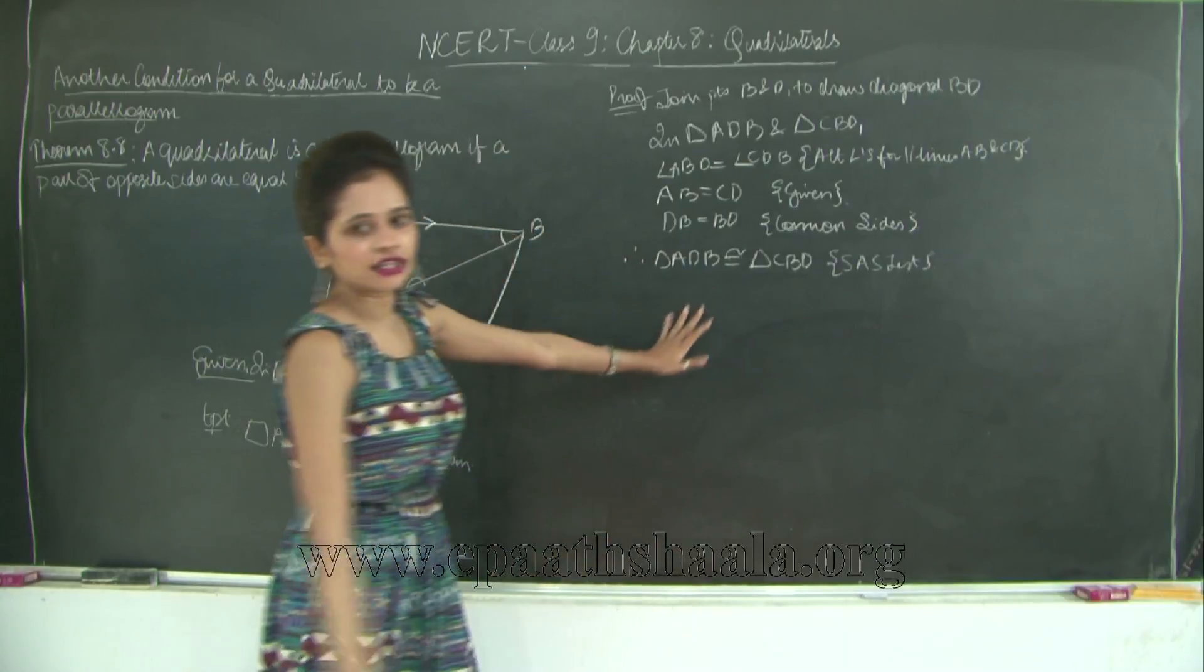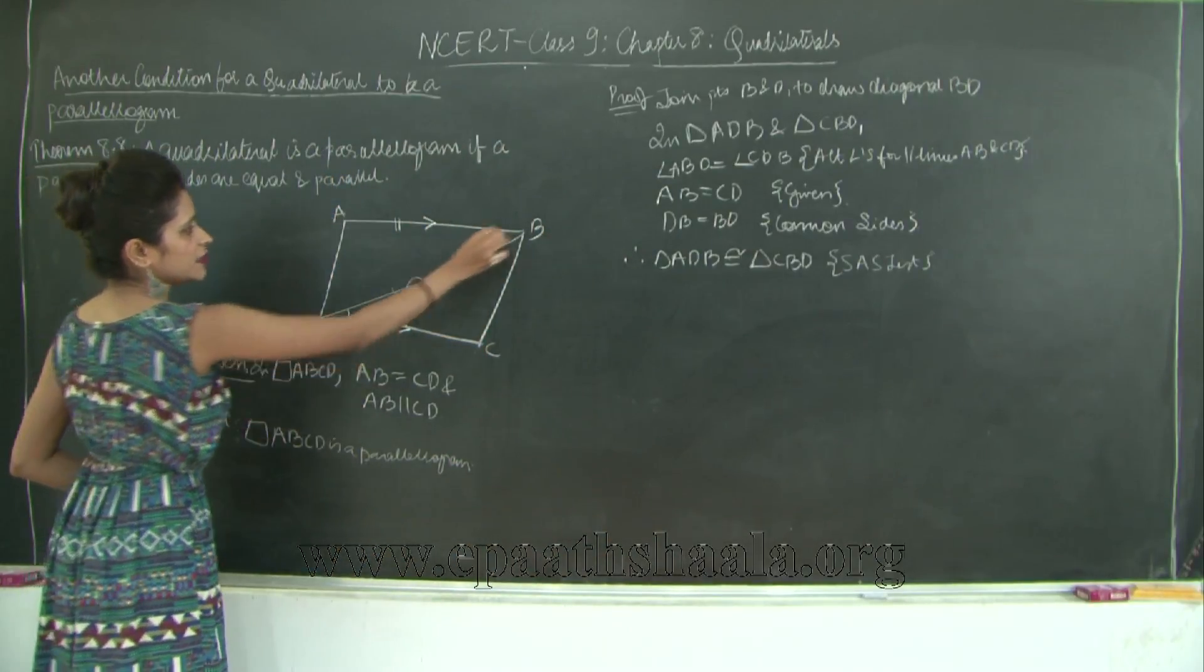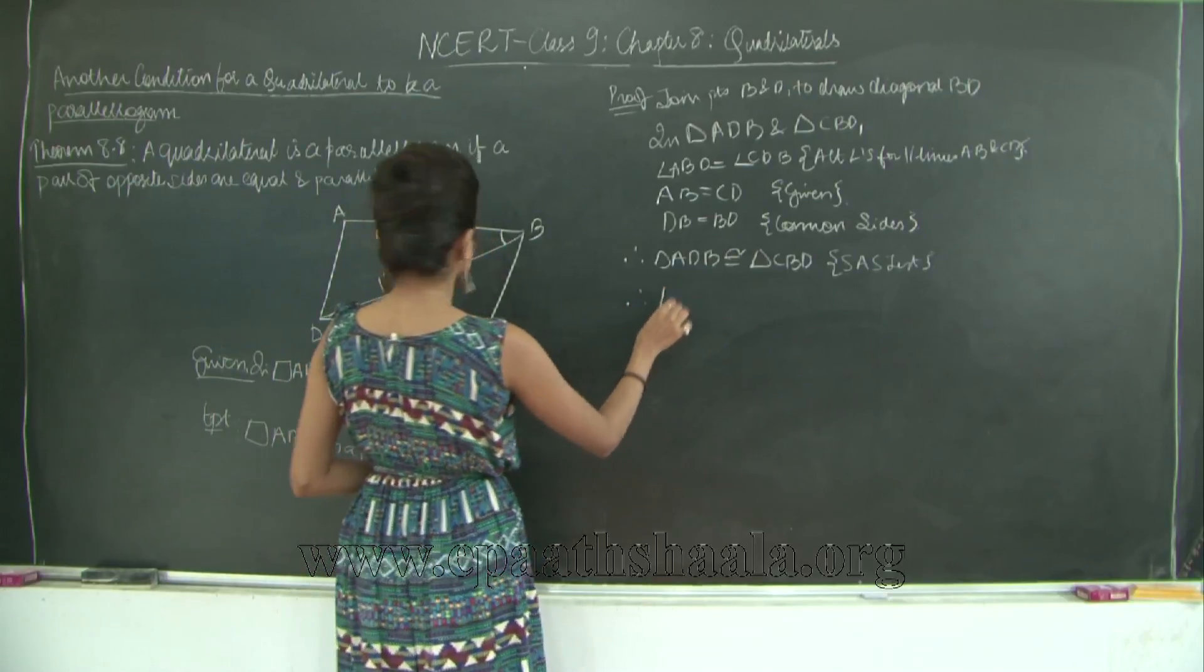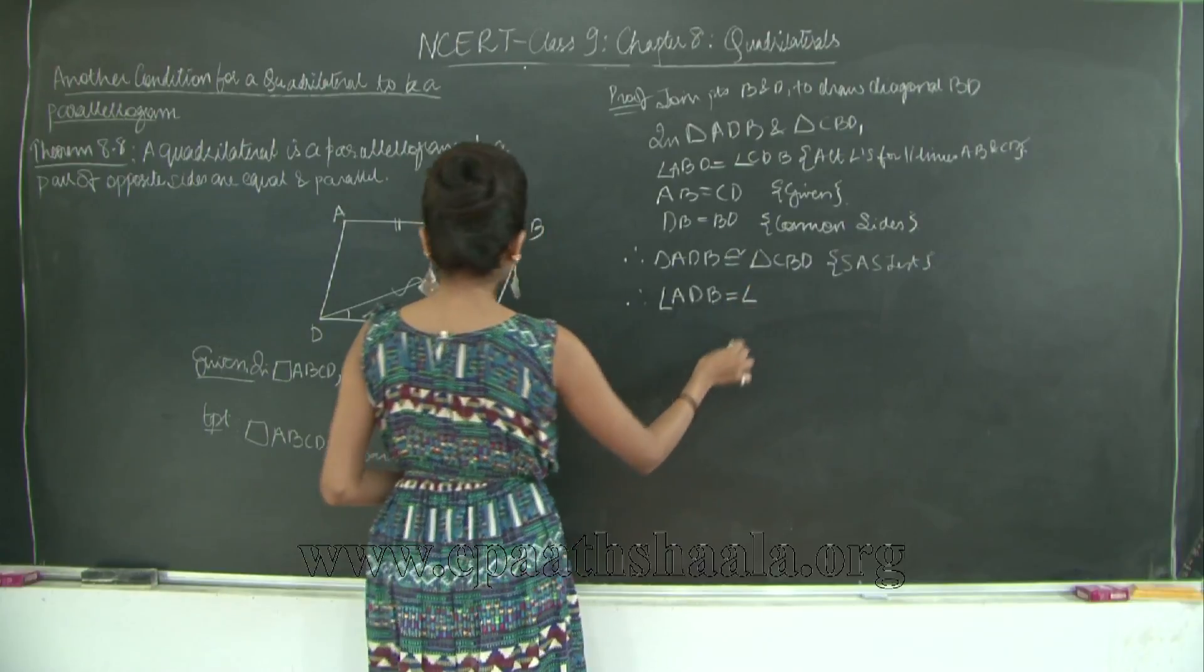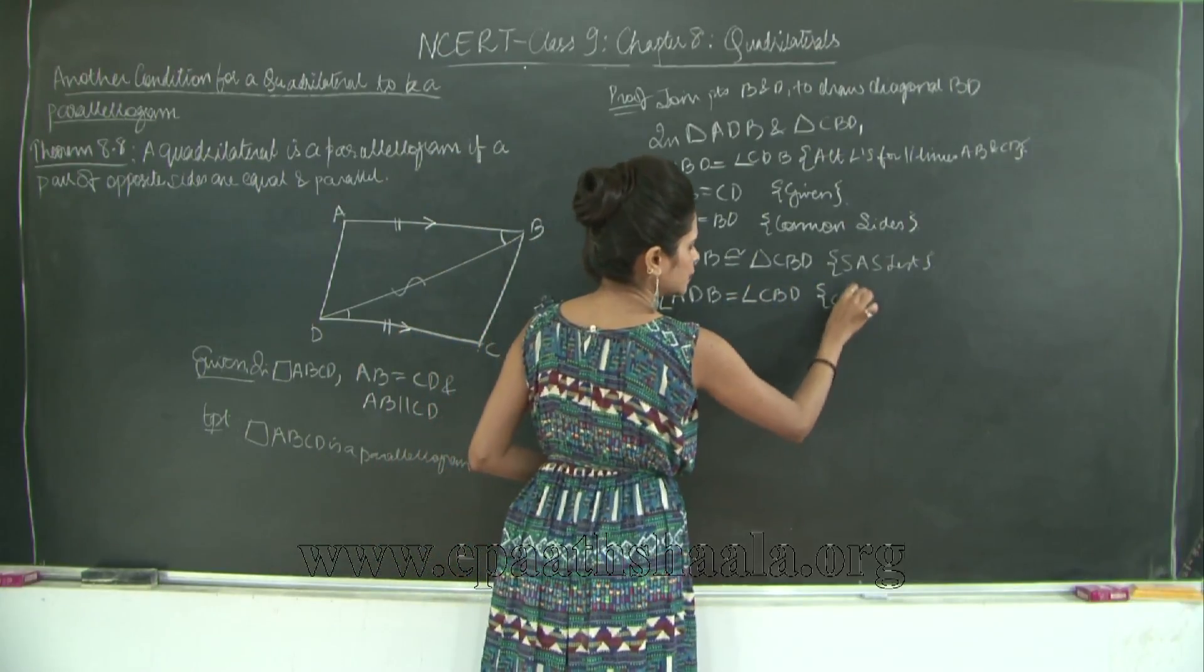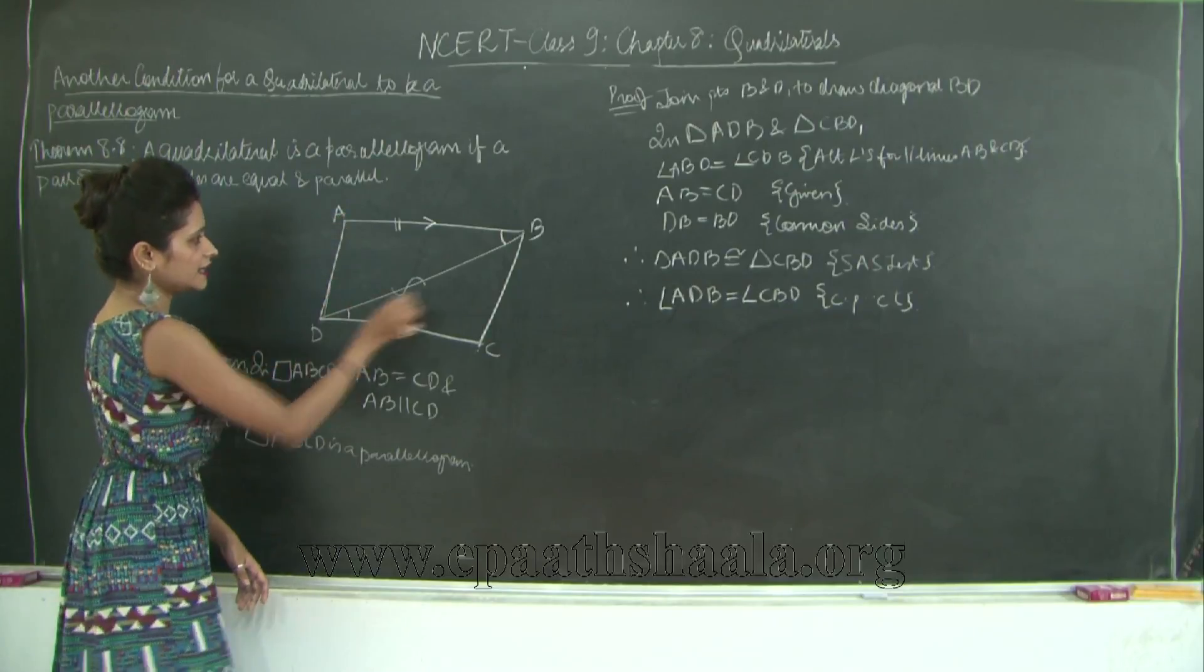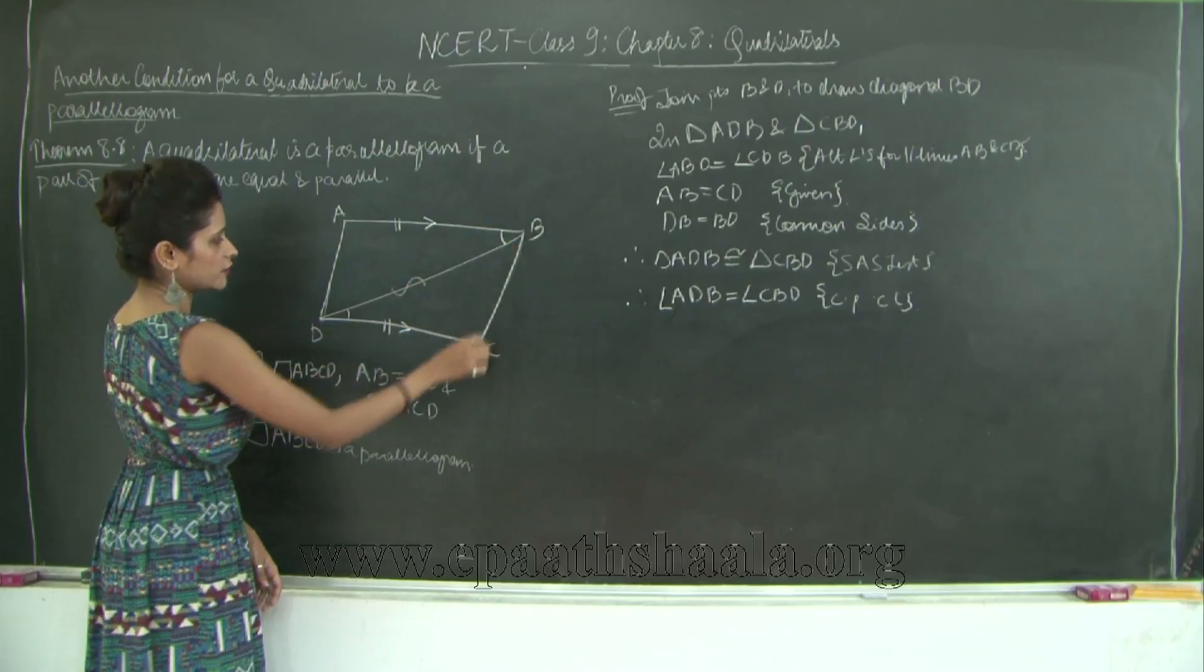So once we prove that these two triangles are congruent, we can say that angle ADB is equal to angle CBD by corresponding parts of congruent triangles. Therefore angle ADB is equal to angle CBD by CPCT, but these are a pair of alternate angles for lines AD and BC. If you notice they form a Z over here.